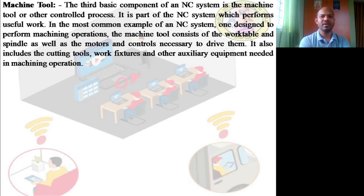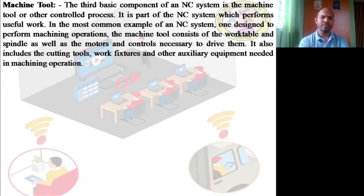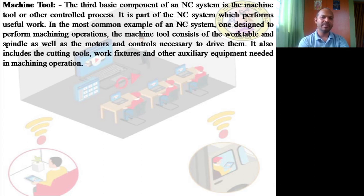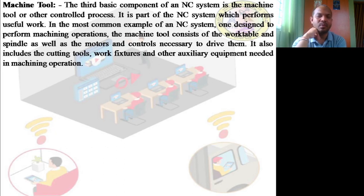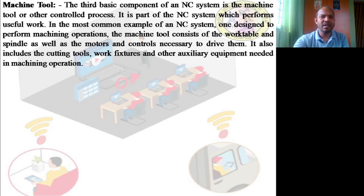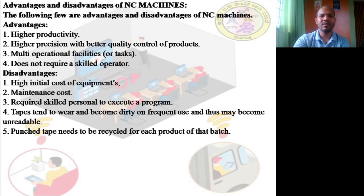The third basic component of the NC system is the machine tool or other controlled process — it is the part that performs useful work. In the most common NC example, designed for machining operations, the machine tool consists of a work table and spindle, plus the motors and controls necessary to drive them. It also includes cutting tools, work fixtures, and auxiliary equipment. These are essentially the hands of the NC machine.